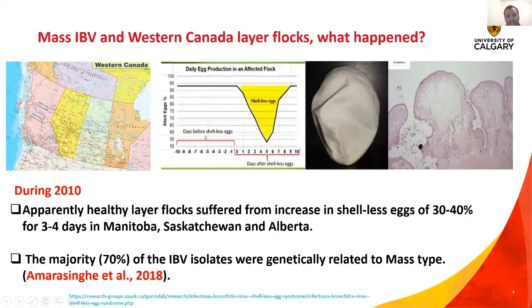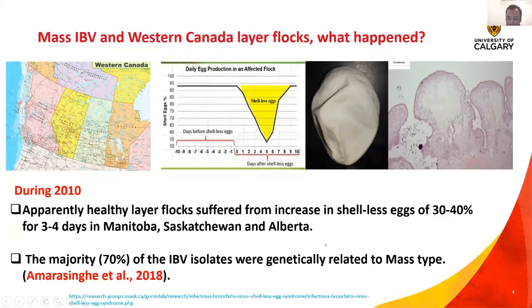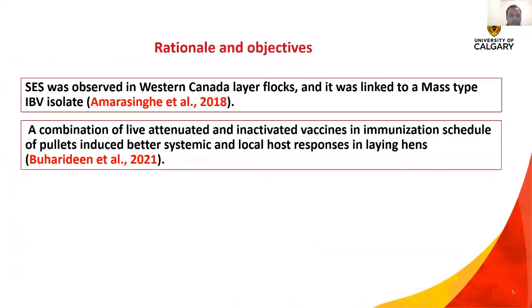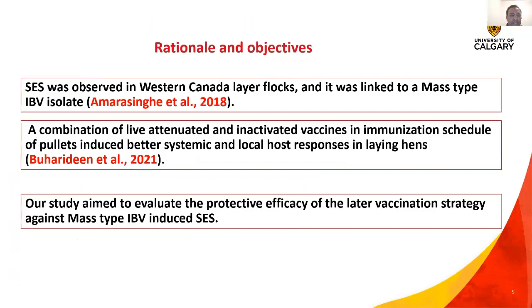Regarding mass IBV and Western Canada layer flocks: during 2010, apparently healthy layer flocks suffered from an increase in shell-less eggs of 30 to 40 percent for three to four days in Manitoba, Saskatchewan, and Alberta. The positive IBV samples were subjected to molecular characterization, and about 70 percent of these IBV isolates were genetically related to mass-type IBV.